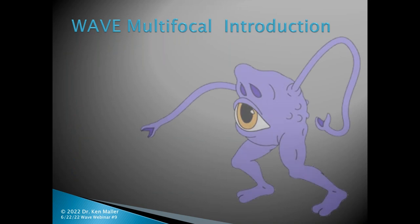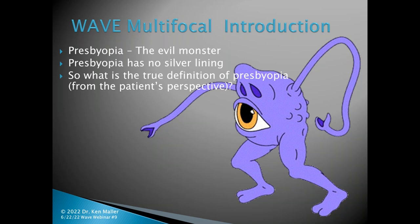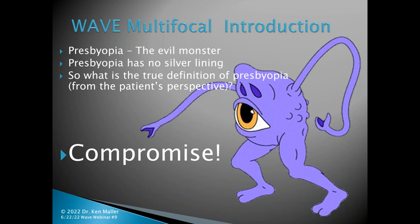We've got the evil monster presbyopia — there is no silver lining. So let's talk about what the true definition of presbyopia is. From the patient's perspective, presbyopia is all about compromise. Since we can't restore that 10-year-old functioning eye, whatever we offer to the presbyope is going to be some form of compromise. None of our options are as good as a 10-year-old accommodating eye.